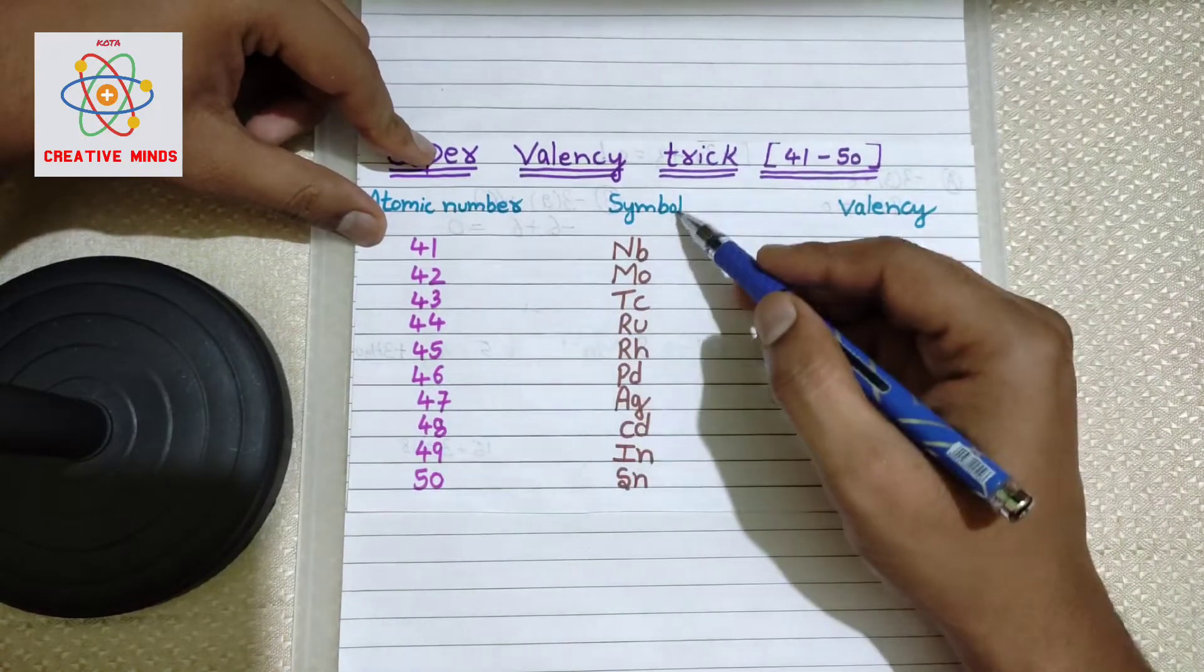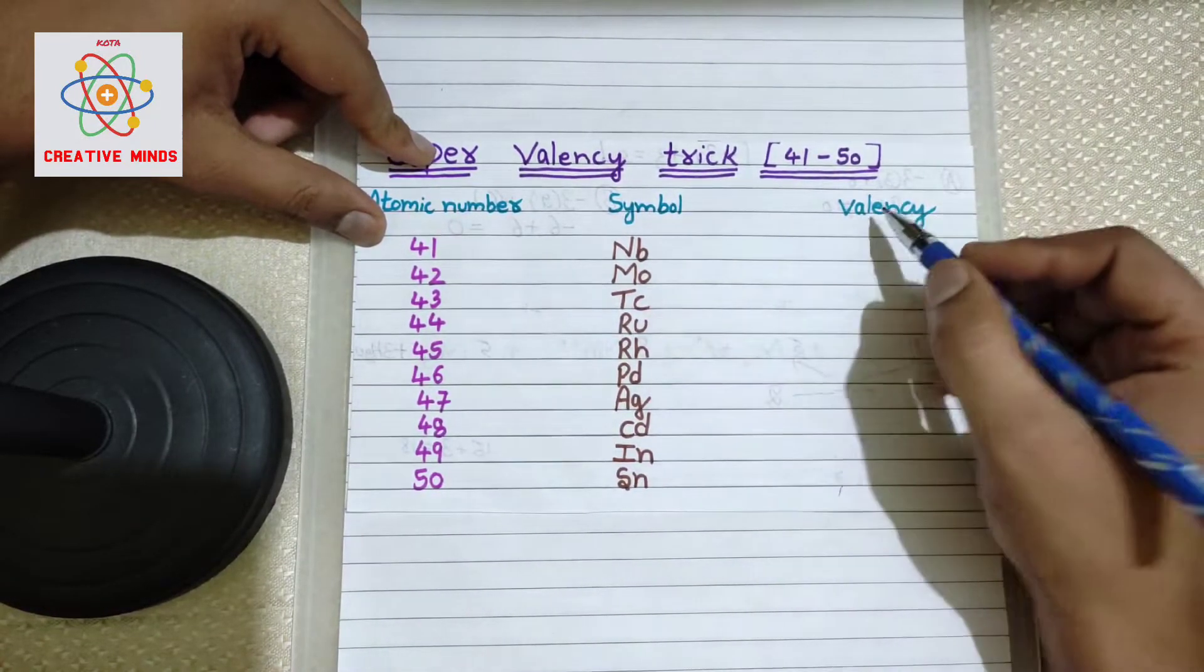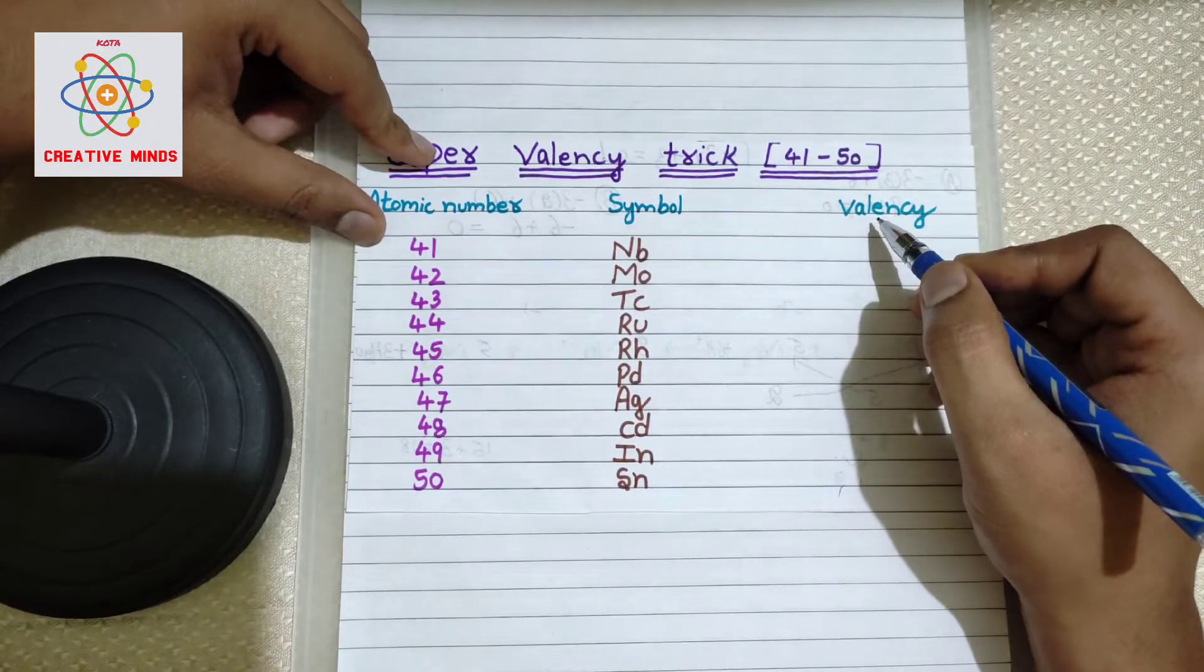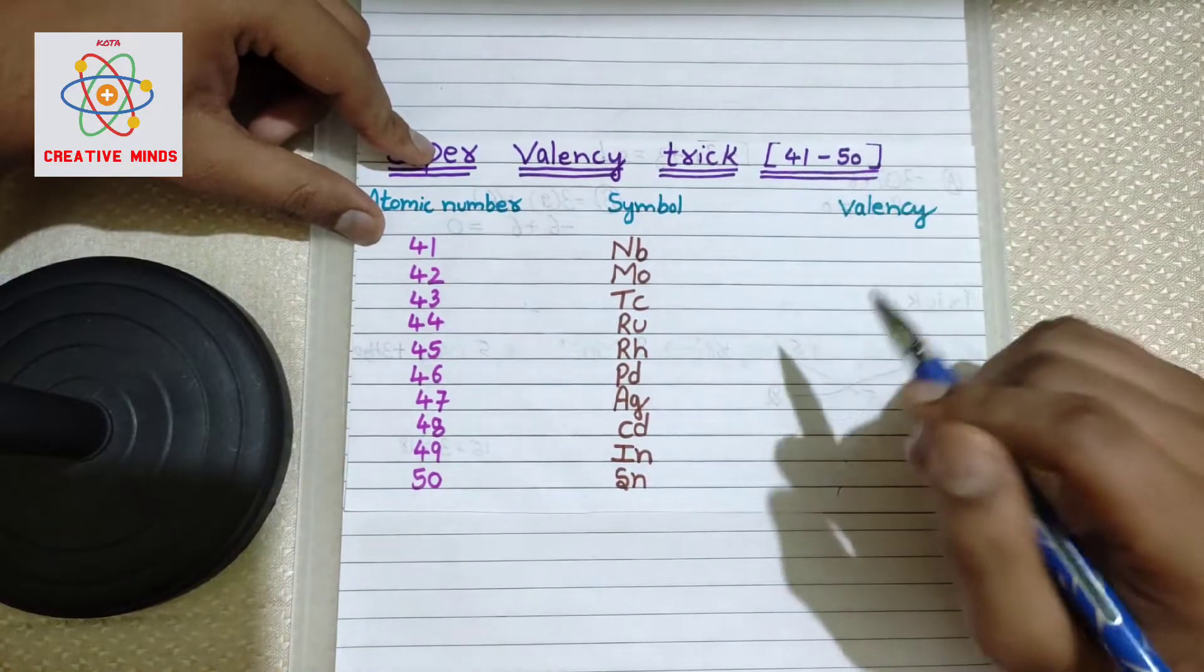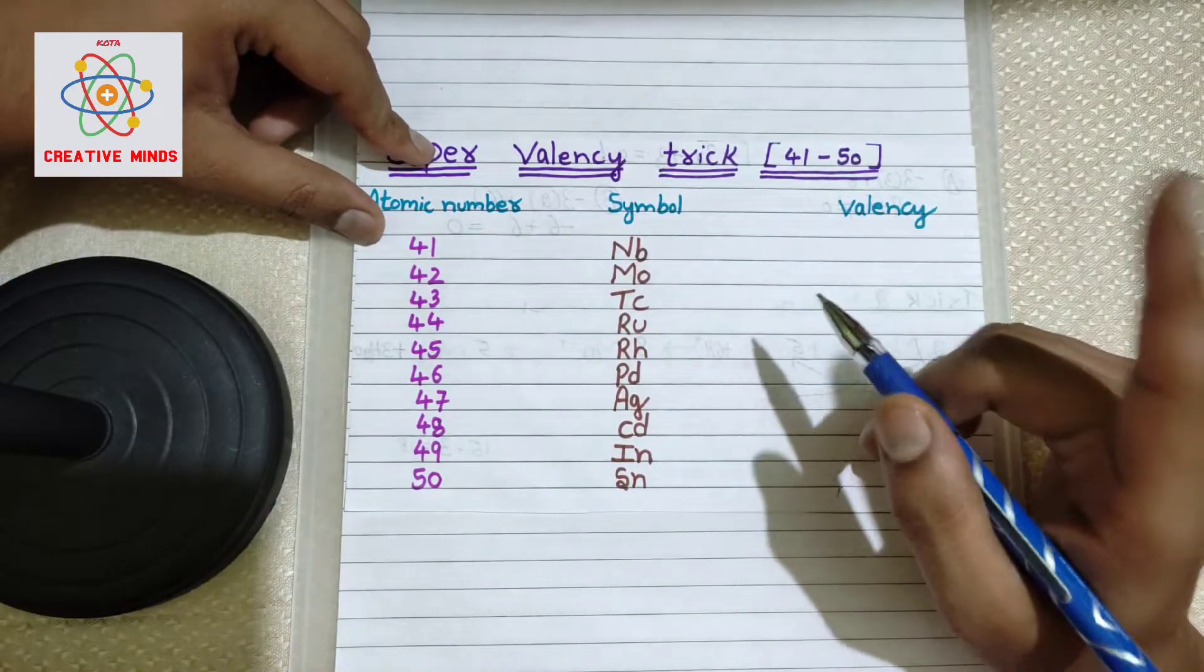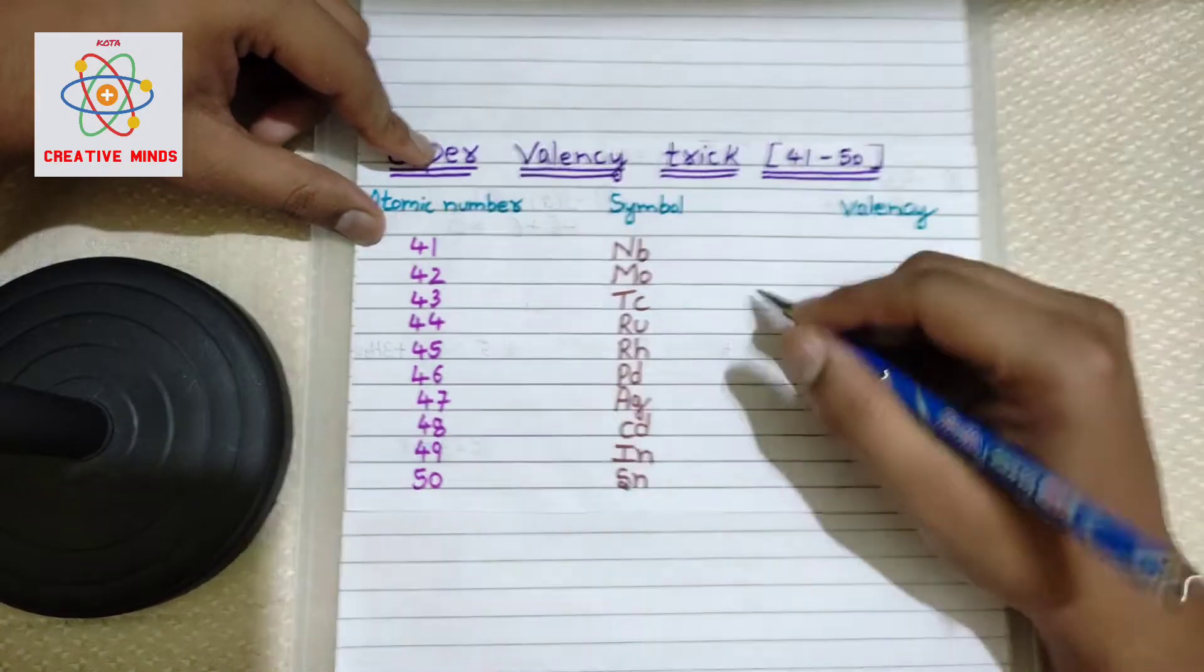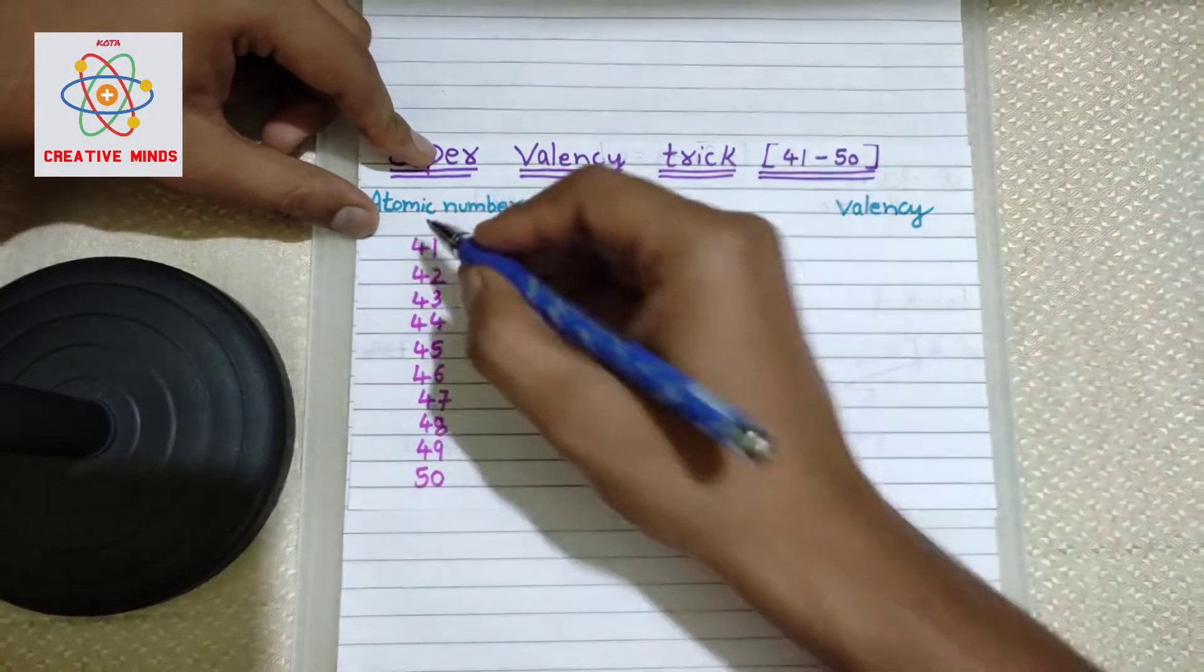Here we have symbols of the respective elements, then here we will be writing the valences by using some amazing shortcut tricks. Let us start the video. Do watch the complete video because I always say half knowledge is very dangerous. Now here, as you can see, the first atomic number is 41, 42, 43.